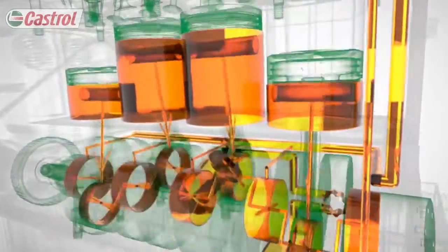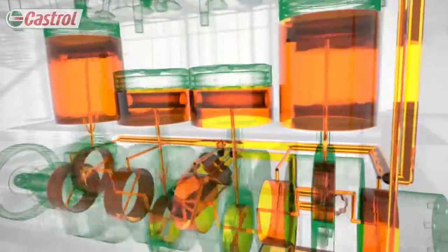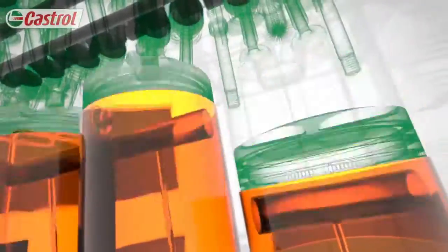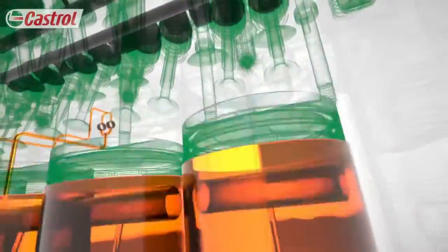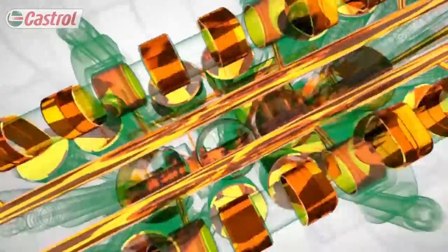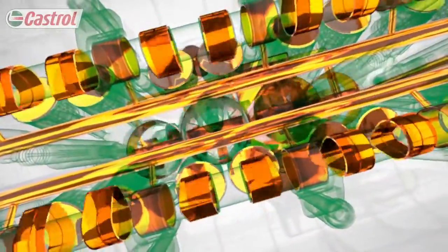The bearings, supporting the crankshaft on a continuous film of oil. Pistons, cooled down and kept clean by the oil's detergent action. And the valve train, protected by the oil's anti-wear system.